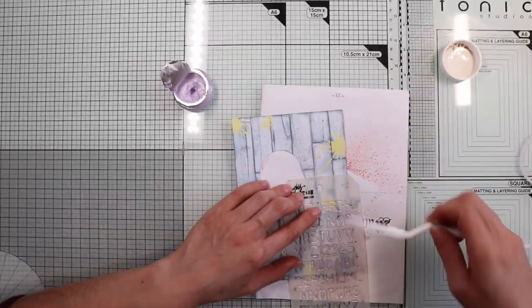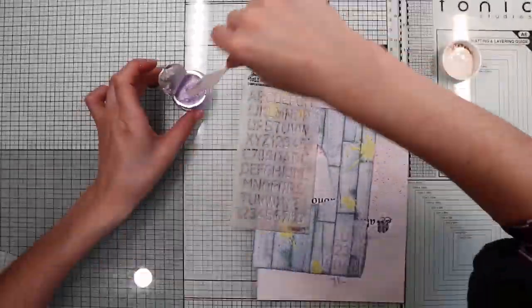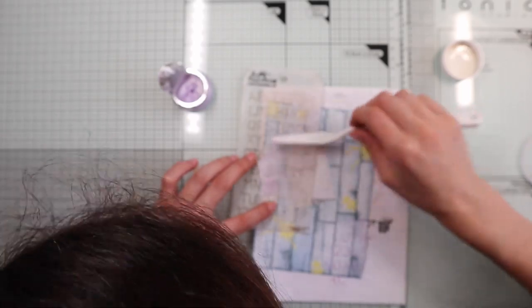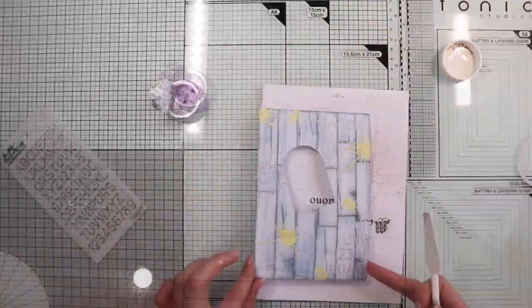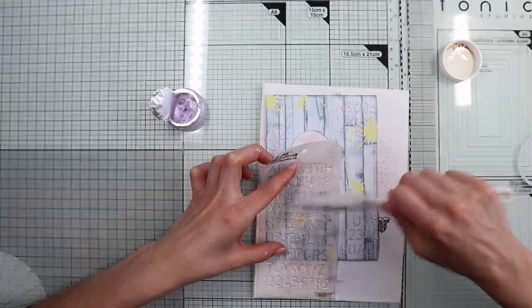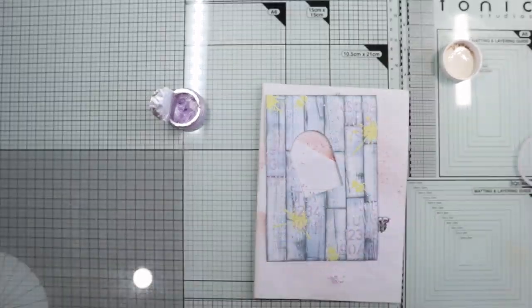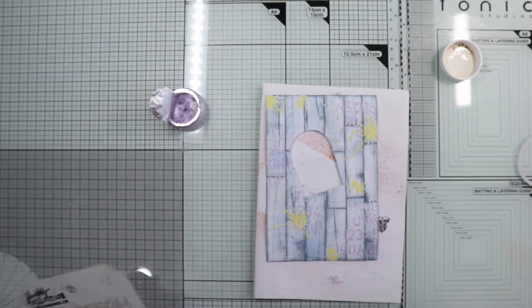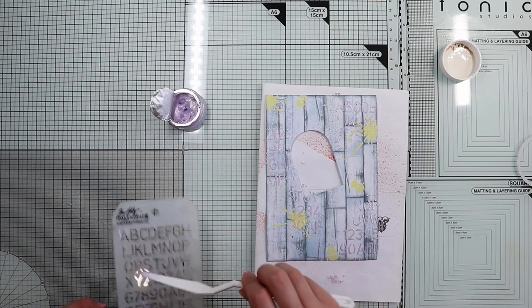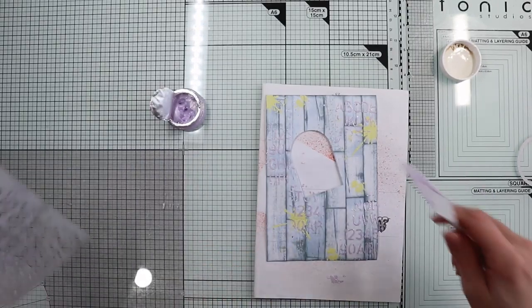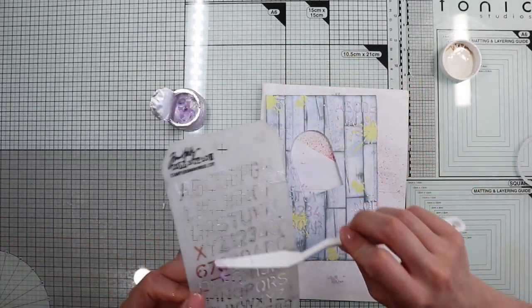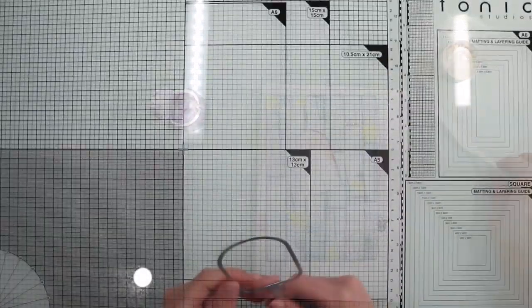As you can see, I select only some portions of the stencil, covering some random points of the background. And here is the background totally created by us, by using in a card the techniques that are usually used in mixed media projects, such as a journal, tag, or canvas.